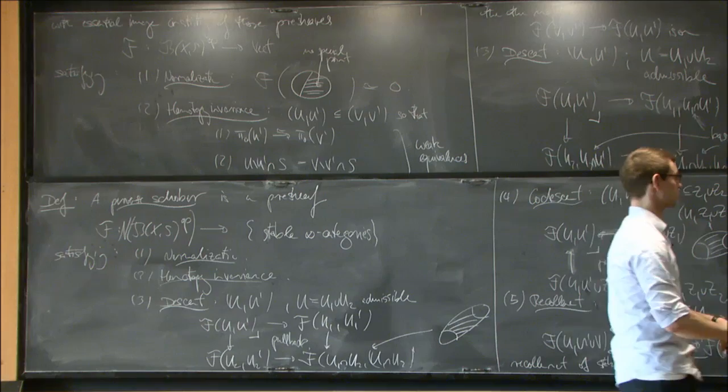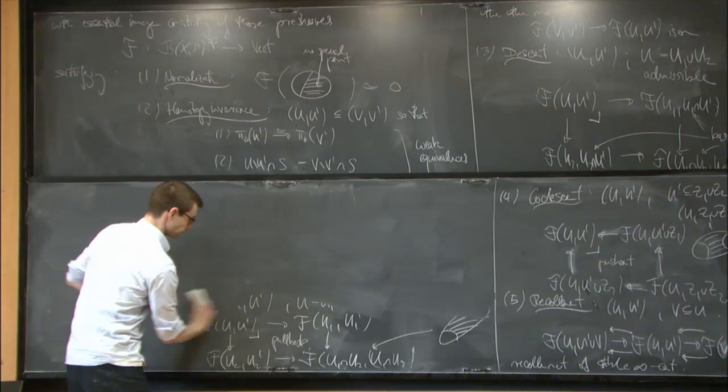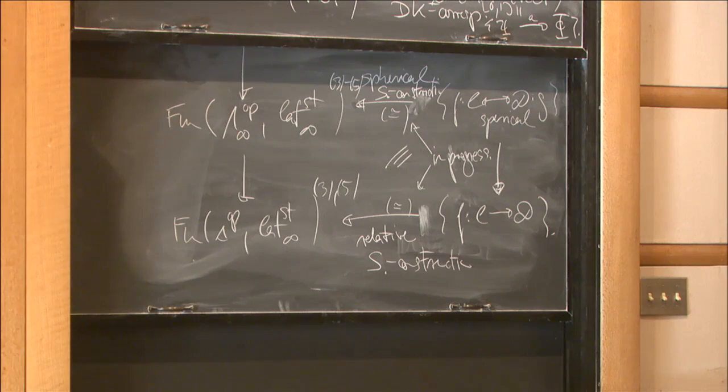It's just a bunch of beautiful constructions from homological algebra and K-theory that you can use to massage this data — starting with local classification data and turning it into an intrinsic datum which doesn't depend on any coordinates, but is really defined as a sheaf in the sense you would want.